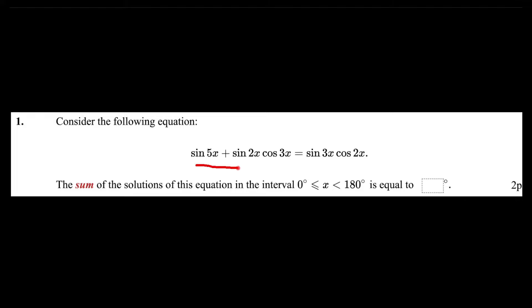I hope that now you have a little bit more experience to solve harder problems. So consider the following equation. The sum of the solutions of this equation in the interval 0 degrees less than or equal to x less than 180 degrees is equal to what? You are supposed to find it. I have already put the degree sign here for you, so you just need to find and type the number.